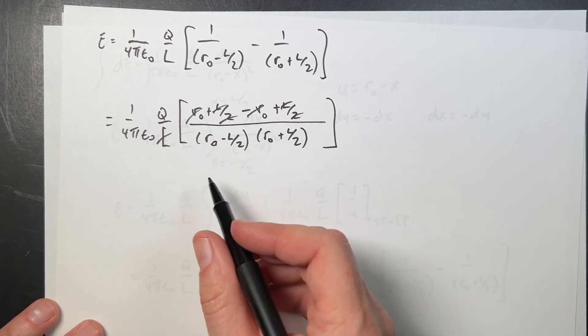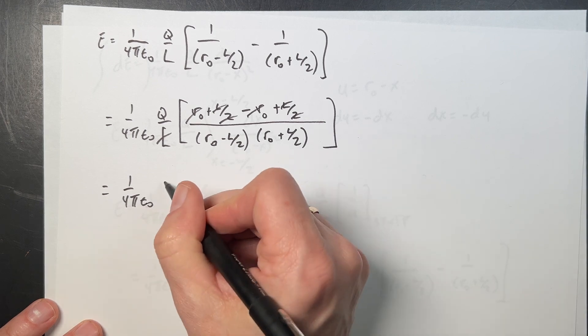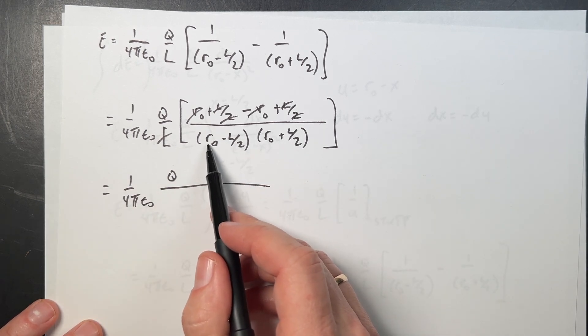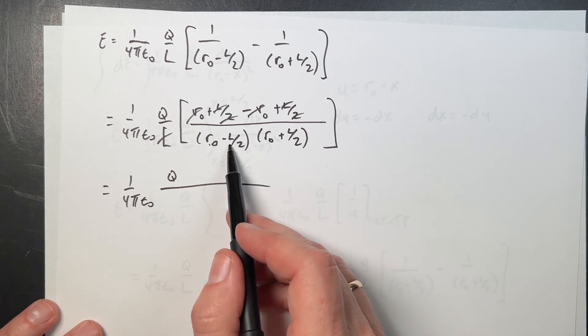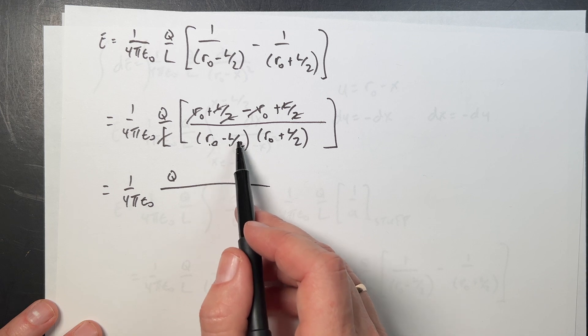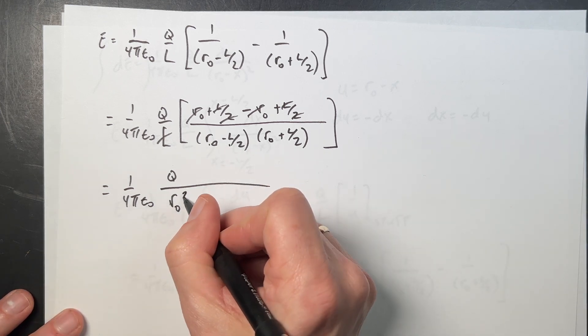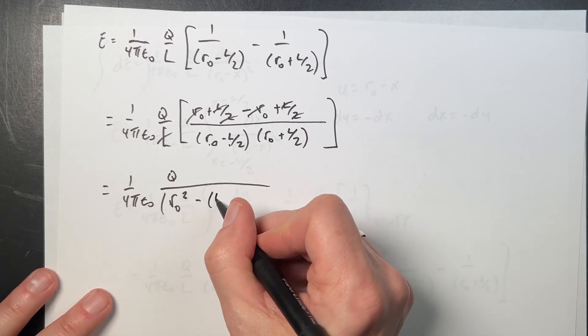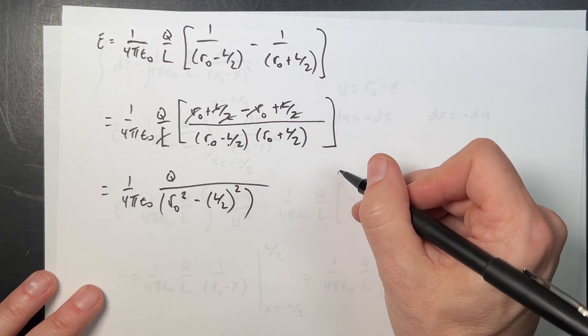And then I get L over 2 plus L over 2 is just L. And then I can multiply this out. So I get 1 over 4π epsilon naught q. This is r0 squared, and then this is minus L squared over 4. And then the cross term cancels because there's a minus sign. So r0 squared minus L over 2 quantity squared. The end. Now let's check.